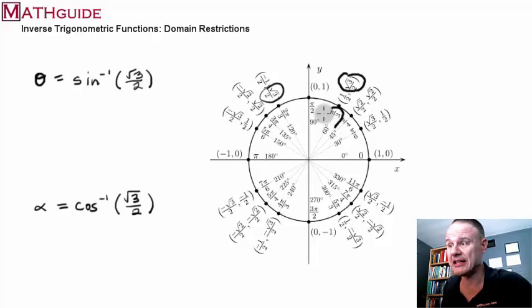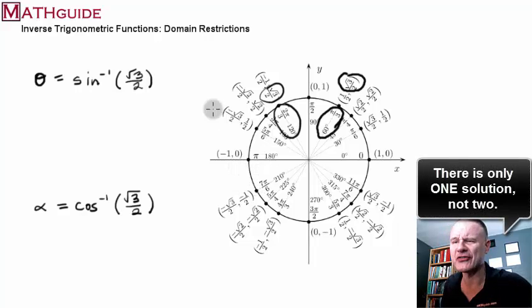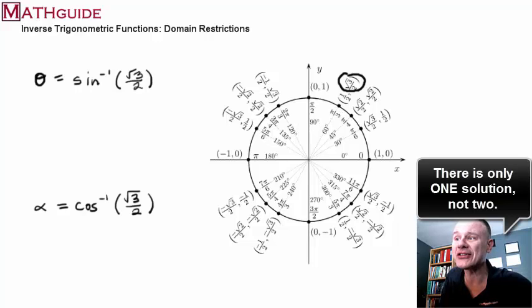Well, if you look at it, these two, whether it's 60 degrees or pi over three, or two-thirds pi or 120, both of those angles make the sine square root of three over two. So you think that there's two possible solutions for this problem, but no. A calculator only says there's one solution.